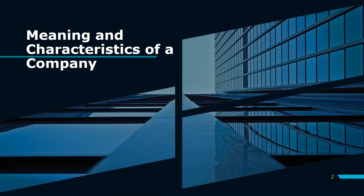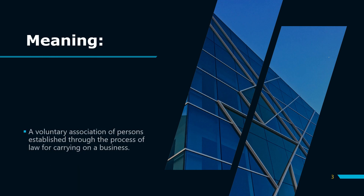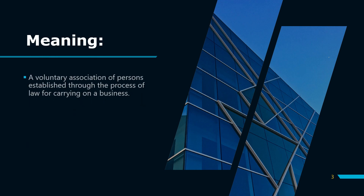A company comes into association after voluntary involvement of persons to carry on a legal business. When some group of people come together voluntarily to carry on a lawful business — obviously they have a legal business, they cannot run an illegal business.